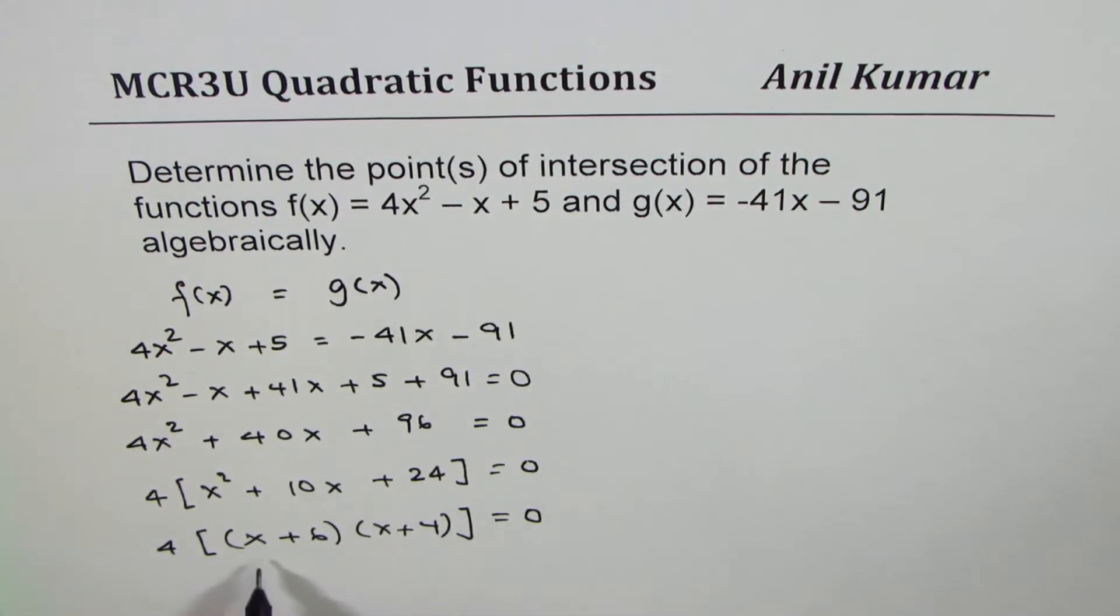So that gives us two points. x + 6 = 0, that means x = -6 and x + 4 = 0 gives x = -4.